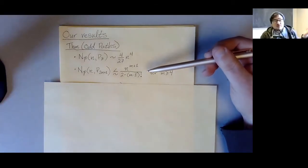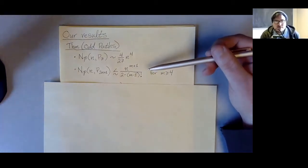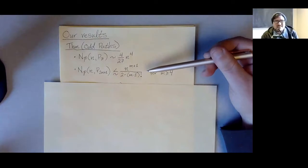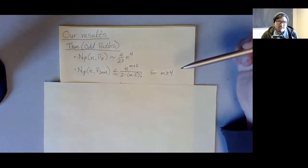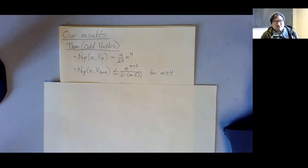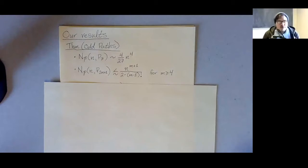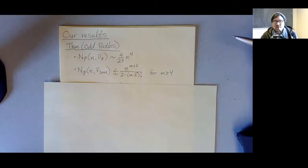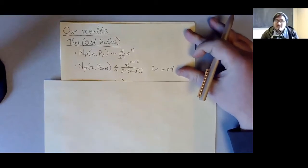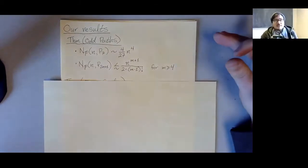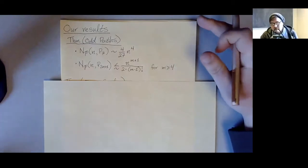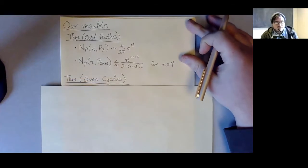We're really fighting for the leading constants. In a naive proof you would probably get a leading constant of something like 6^m, which is pretty bad. We're able to bring that down to n^{m+1} over about m factorial, which is much better. As we were working, we figured out that the same ideas apply to even cycles, and in fact to a much broader class of graphs. But I'll just focus on even cycles and odd paths for this talk.